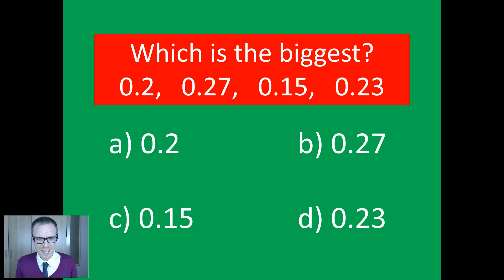Because if the child just thinks to themselves, well, 27 is bigger than 2, 15 and 23, they're going to go for B, 0.27. But they may not have any understanding whatsoever of place value specific to decimals. So, it's possible to get this question right while still holding a major misconception.